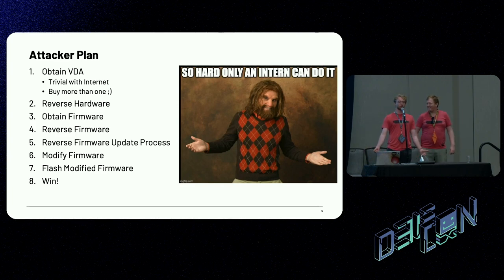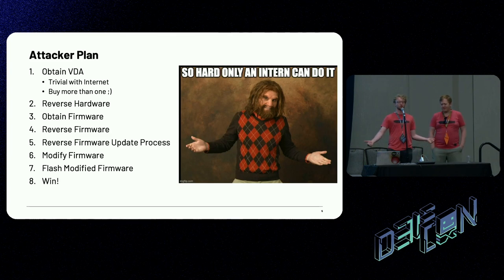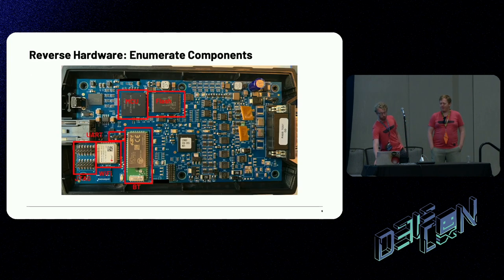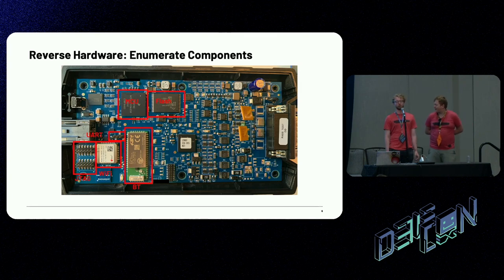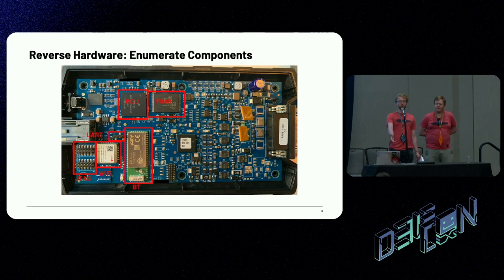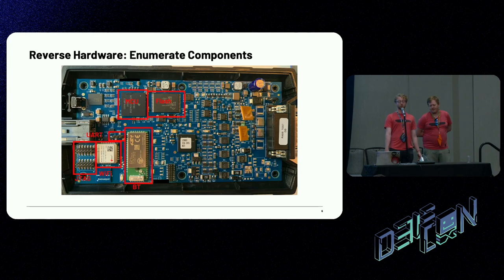The first step when reversing a new device is grabbing your favorite screwdriver set and taking it apart. This is a shot of the PCB of one of the VDAs. The vendor did a great job making connecting to JTAG and UART super hard by giving us really awesome adapters to just plug into. We identified the flash, the microcontroller, a Wi-Fi chip, and a Bluetooth chip on this board.